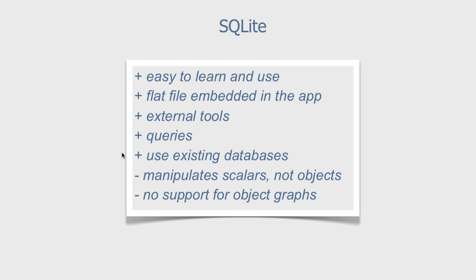But from an object-oriented perspective, SQLite does have some limitations. It manipulates scalars — i.e. primitive types like numbers and text strings — and not objects. It does not handle object graphs, which is important as we will see later.